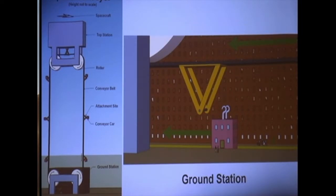A similar procedure is used to attach and detach the conveyor cars at the top station, except that the conveyor cars are taken into the interior of the top station for loading and unloading. The components to construct spacecraft would be carried to the top station by the conveyor cars and assembled at the top station, and the spacecraft would be released from the top of the top station.